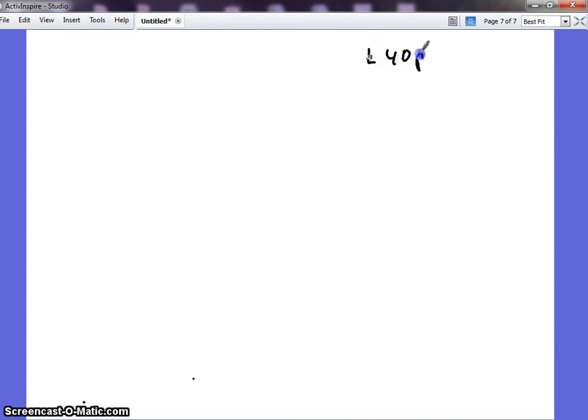Well, lesson 40 part 2, because I ran out of time on the last one. I want to work out two problems with you guys. Alright, so here is one of them: z to the negative third over m times x to the fourth over m squared minus 3z over m. Alright, so that's our problem.